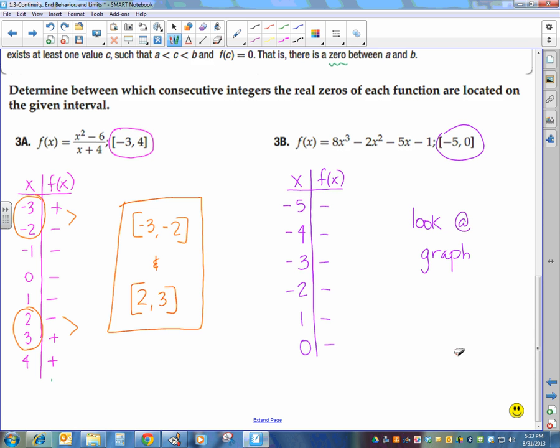So the answer to this particular problem is going to be between negative 1 and 0. And the reason we didn't see it on our table is because we only used integers. We would need to make our table values smaller to confirm that.